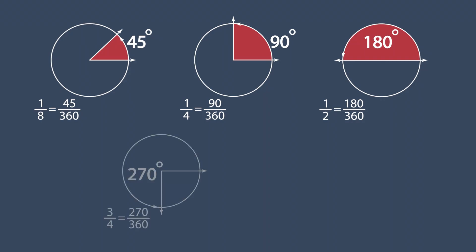Another common angle is 3 fourths of a circle. 3 fourths is equal to 270 over 360, which gives us a measurement of 270 degrees.